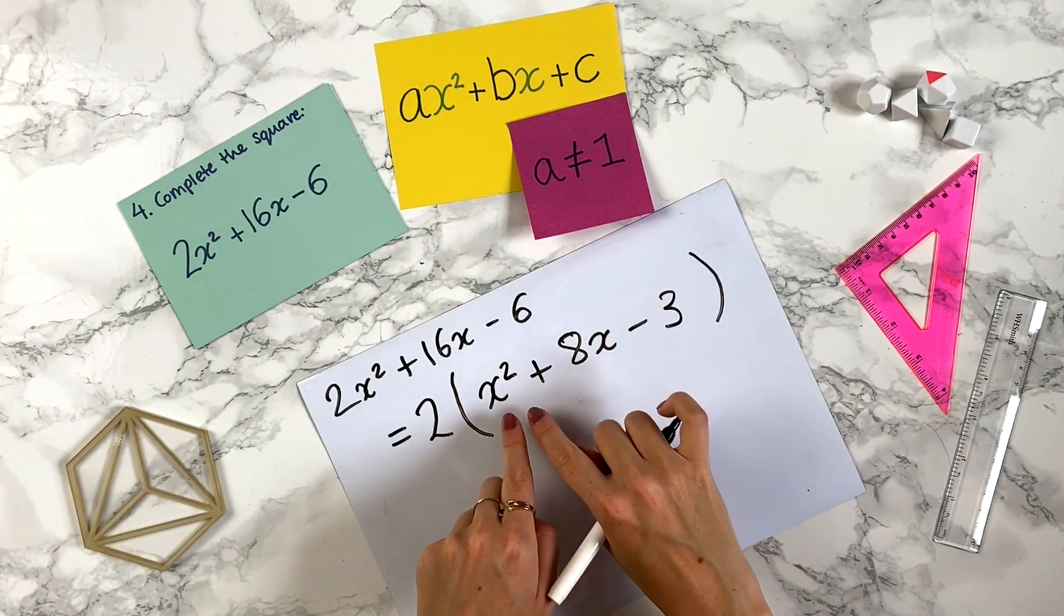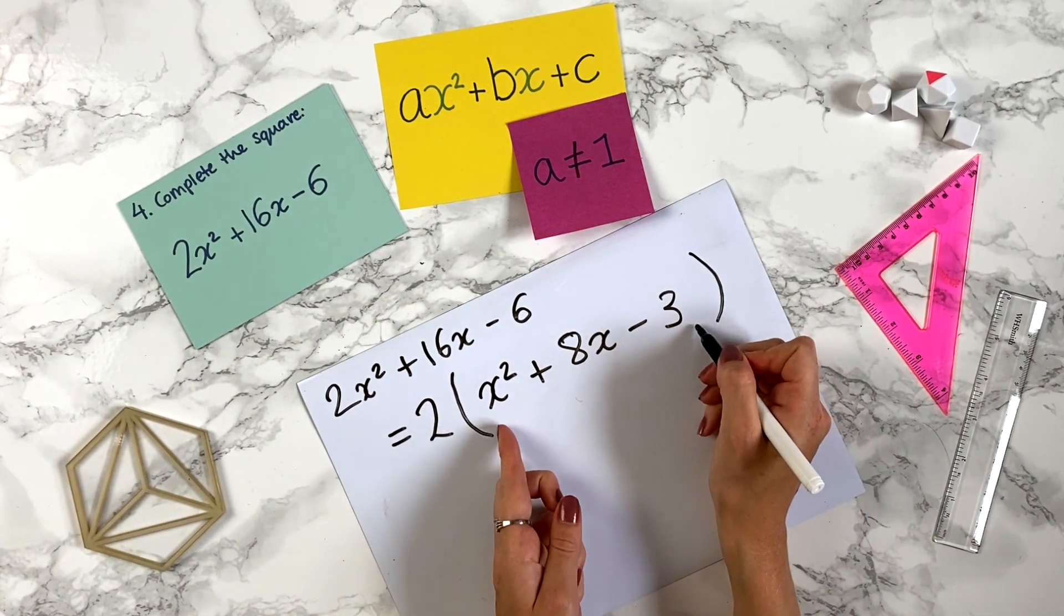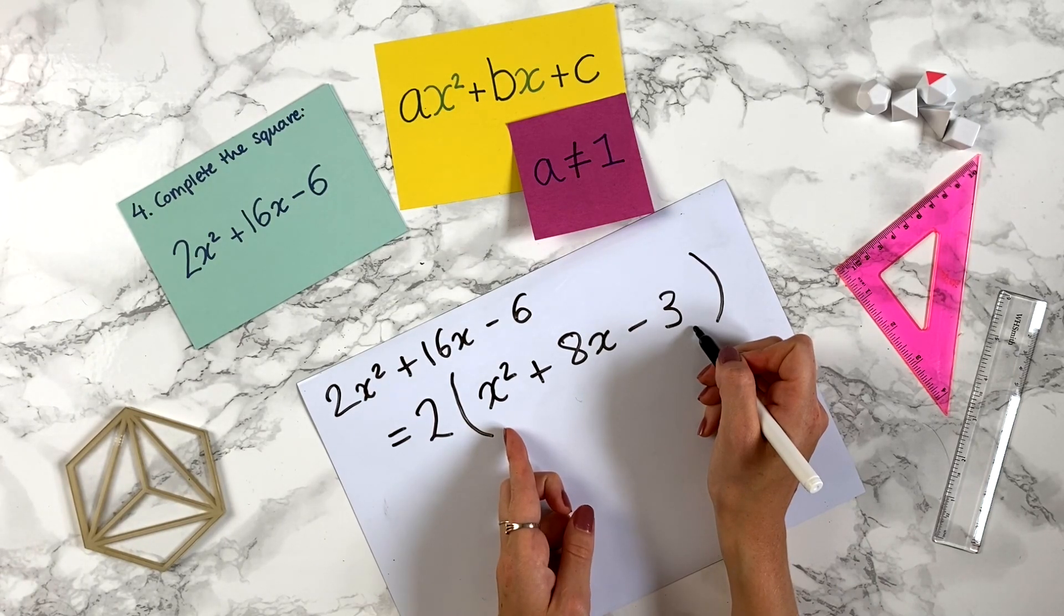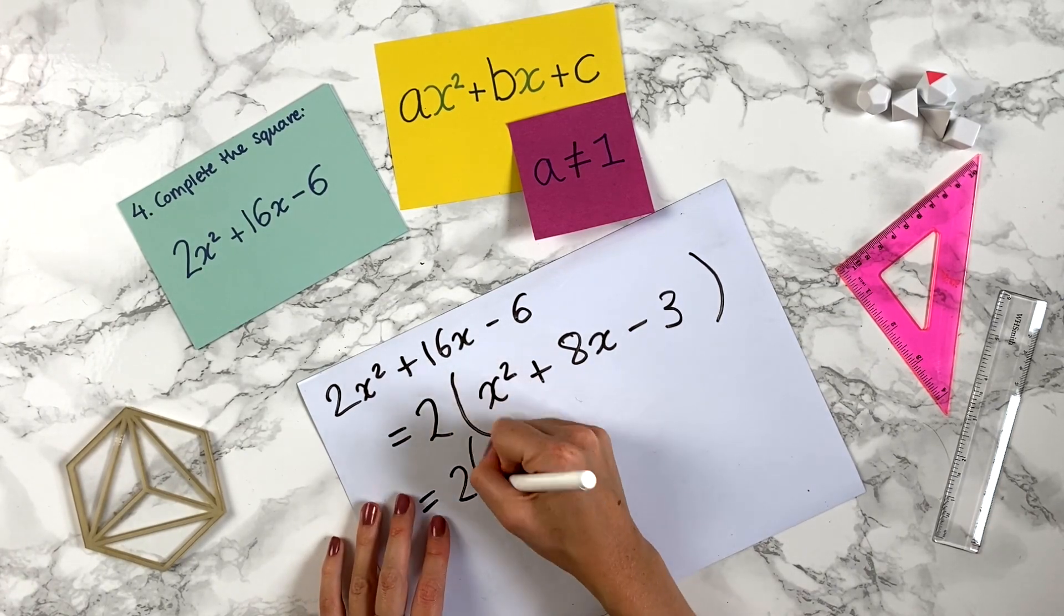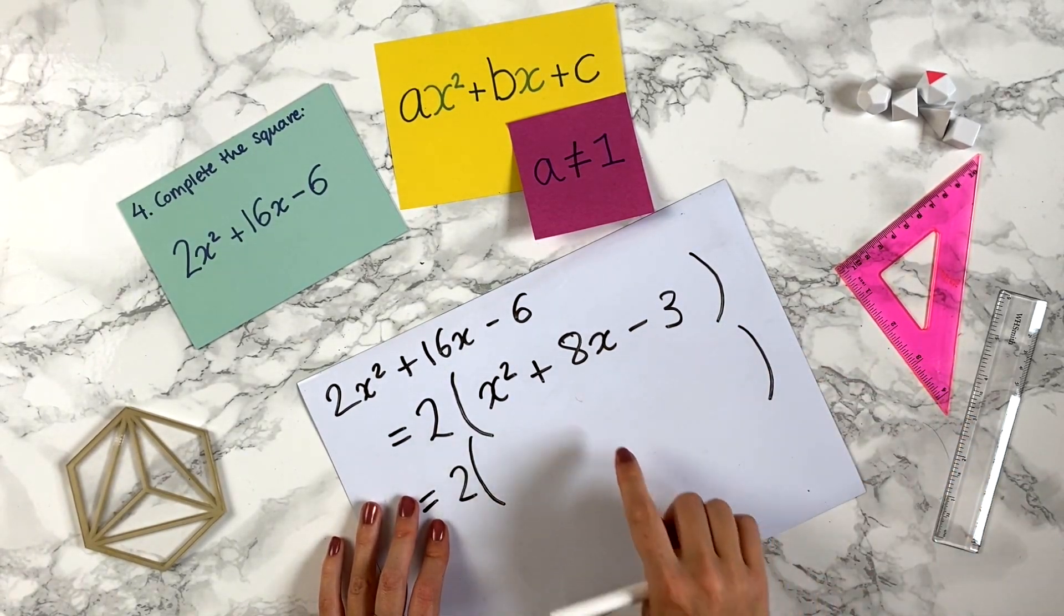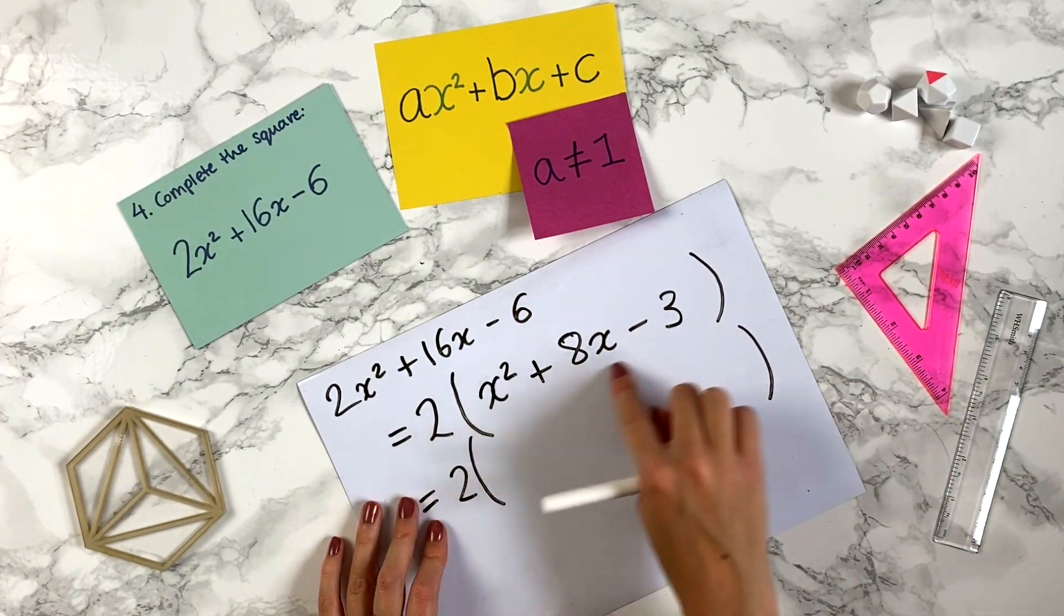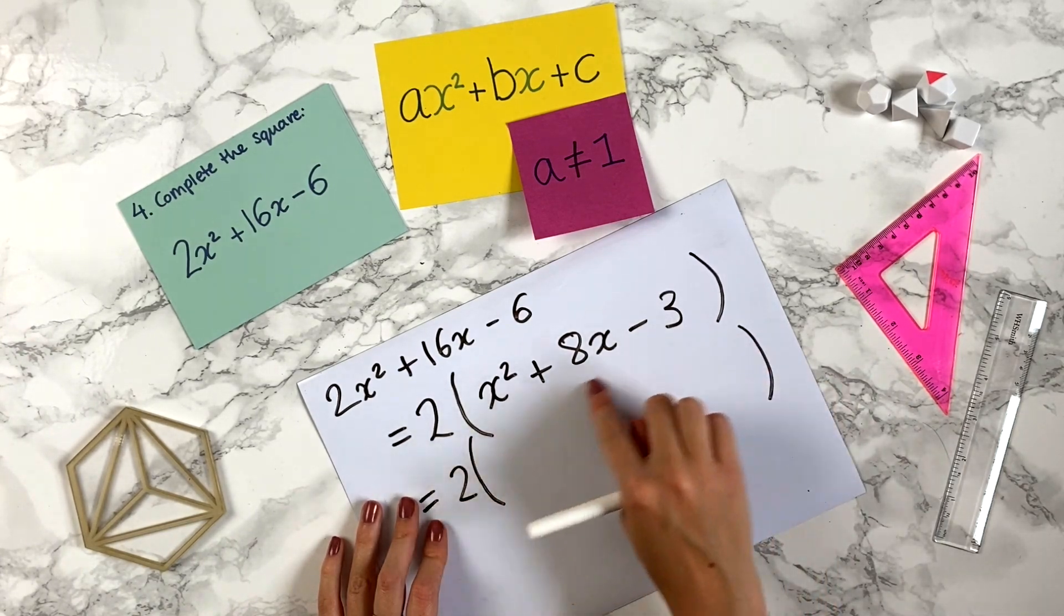Now what you do is you do the method we've just done for this bit inside the bracket but you've got to keep the 2 here all the time. So this equals 2. We've got this big bracket here and what we did before we're going to complete the square on this section here.